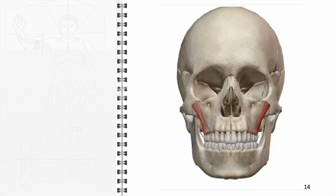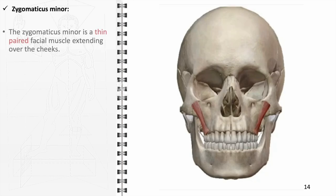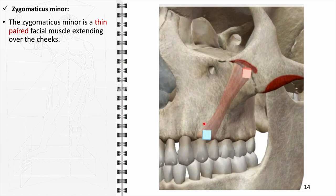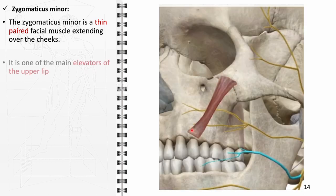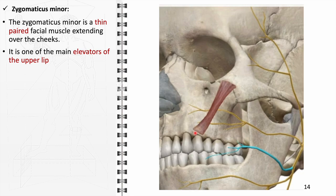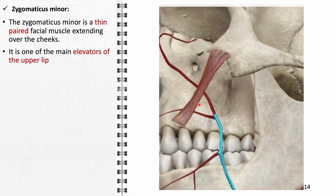The zygomaticus minor, also a component of the buccolabial group, is a thin, paired muscle extending over the cheeks. As one of the primary elevators of the upper lip, it significantly contributes to facial expressions, particularly those of contempt or disdain. It receives innervation from the buccal branch of the facial nerve and blood supply from branches of the facial artery.